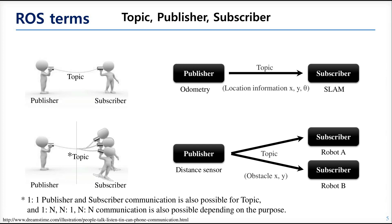There are four types of message communication and we will learn three of them. The first uses the topic message. Topic is a simplex communication — there is one publisher and one or more subscribers. The publisher is a node and the subscriber is also a node. This works continuously and very frequently, so this communication is mostly used for data transmission from sensors like a camera.